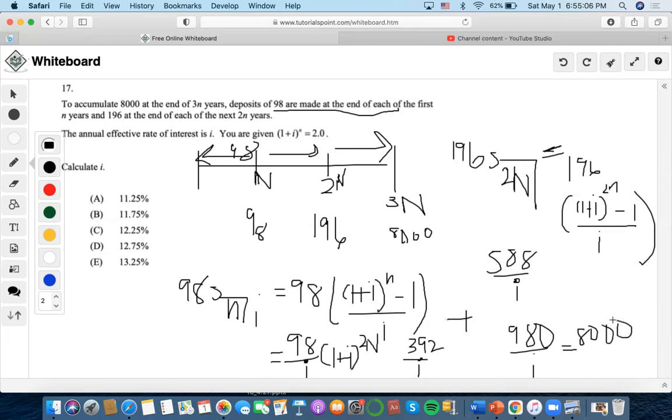So now we bring I to the other side, then we do 980 divided by 8,000, and we end up getting 0.1225, which is 12.25%.